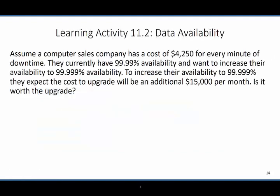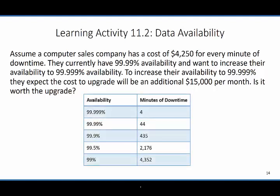I want you to try this activity on your own. Assume that a computer sales company has a cost of $4,250 for every minute of downtime. They currently have 99.99% availability and want to increase it by an extra 9 to reach 99.999%. They expect the upgrade cost would be $15,000 per month. Determine if it is worth the upgrade based on the chart. Go ahead and pause the video, try this on your own, and then come back to compare your answer.